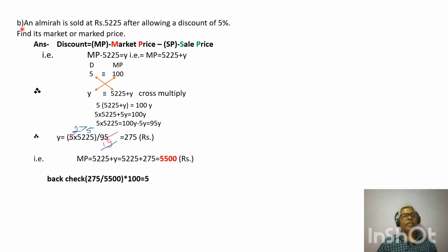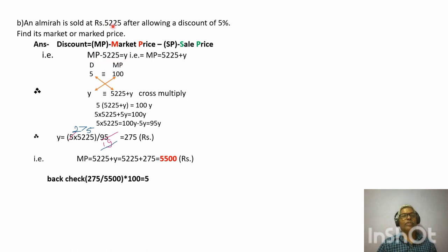The next example: an almirah is sold at rupees 5,225 after allowing a discount of 5 percent. Find the market price. This 5,225 is the sale price and a 5 percent discount has been given. The market price will be more than the sale price — more by the discount amount. If we consider the discount as y, then market price = 5,225 + y.